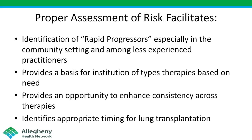Risk prediction is important because it identifies rapid progressors, particularly in the community setting and among practitioners who are far less experienced. It provides a basis for the institution of types of therapy based on need, and also enhances consistency across therapies — meaning the sickest patients get the most aggressive therapy and the most well patients can probably get less aggressive therapy.